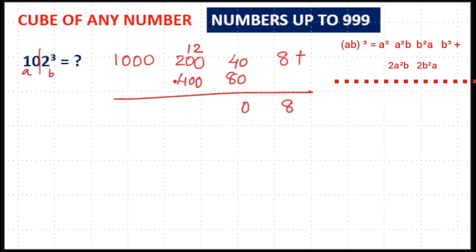400 plus 200, 600 plus 12, 612. 2 right down here, 61 will carry over here. That is 1061 will be here. So, 1061208 is your answer.